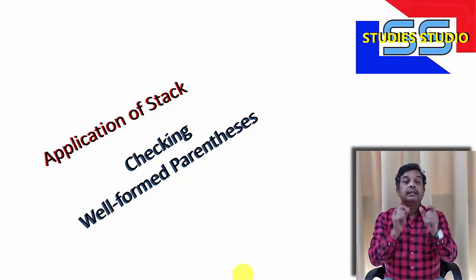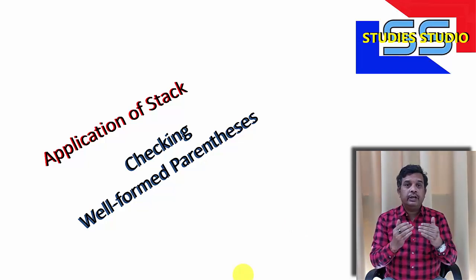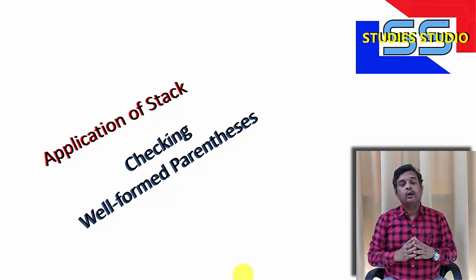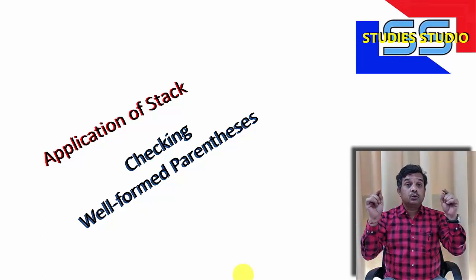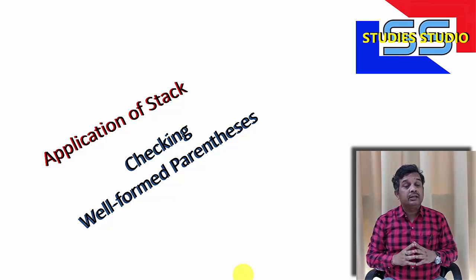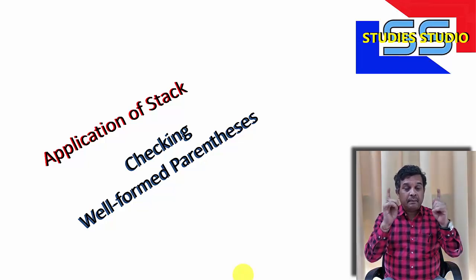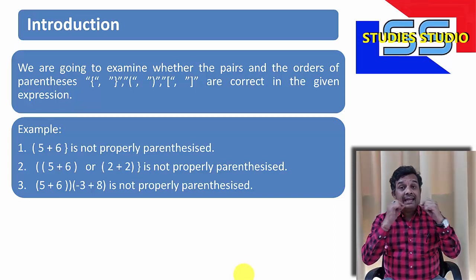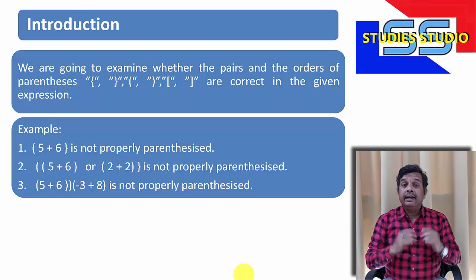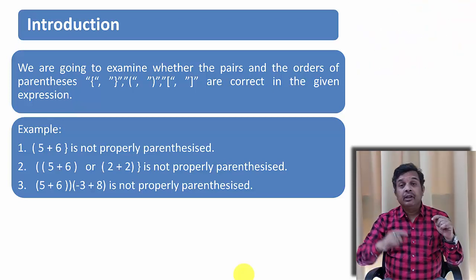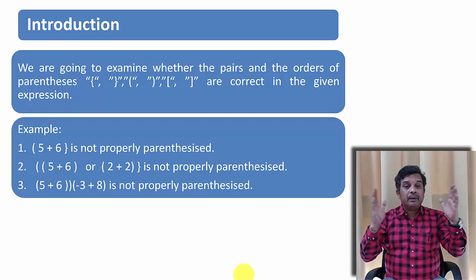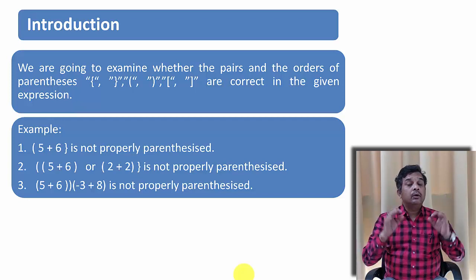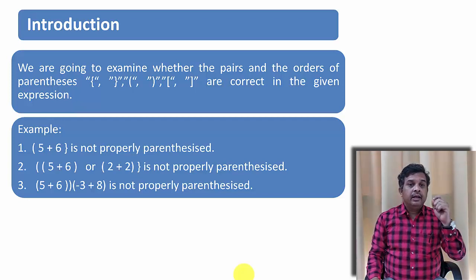When we are checking the well-formed parenthesis, in any arithmetic expression we use parenthesis for proper understanding of the expression. We use flower brackets, square brackets, or simple brackets — in pairs. What we are going to do is examine whether these pairs are in order or not. That means, if a flower bracket started, did it end? If a simple bracket started, did it end? If a square bracket started, did it end properly?